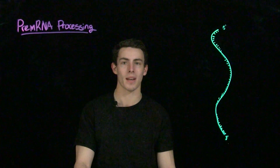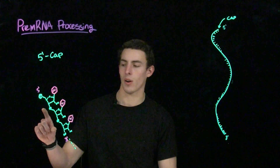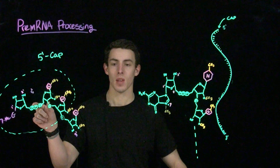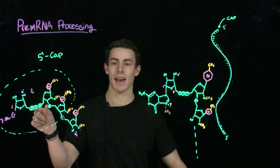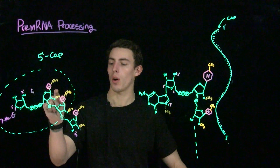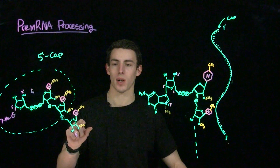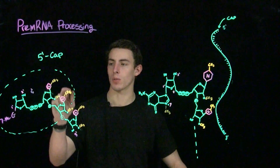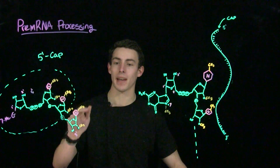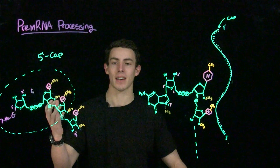To overcome some of these inherent instabilities and also to facilitate the binding of RNA to ribosomes during translation, several modifications are made. The first is the addition of the 5' cap. Shown here is the 5' end of an RNA molecule. The cap is added, and additionally, all the 2' hydroxyl groups near the 5' end, as well as several of the bases near the 5' end, are methylated.